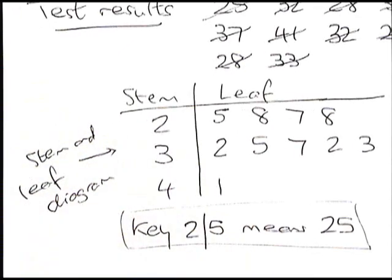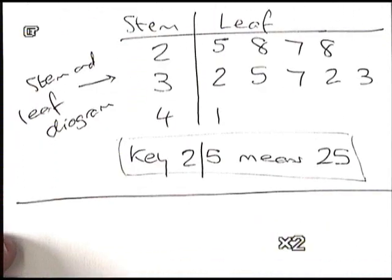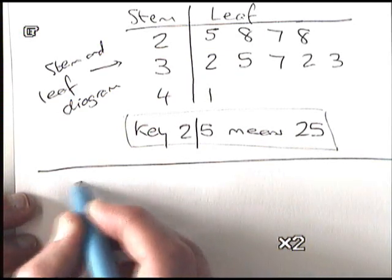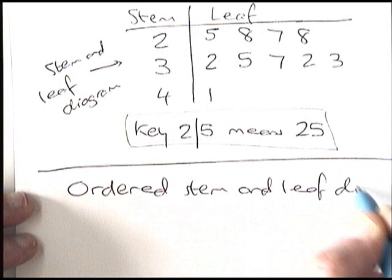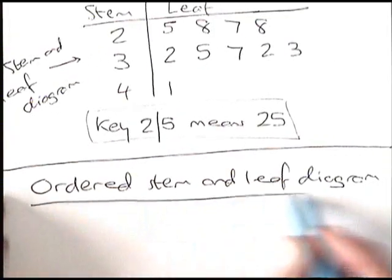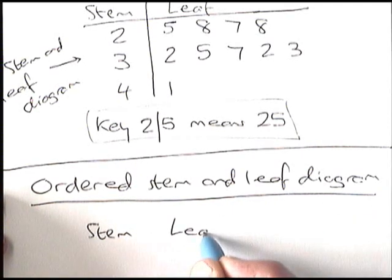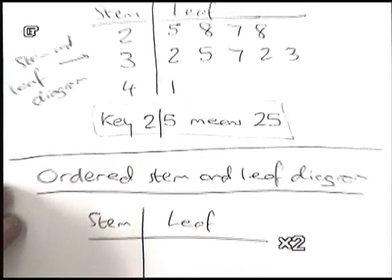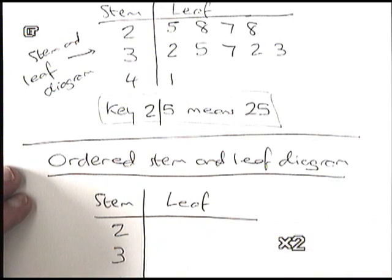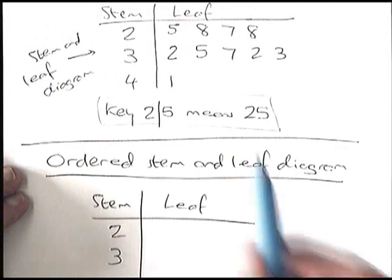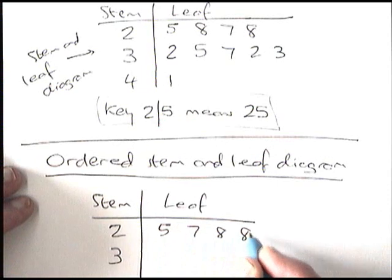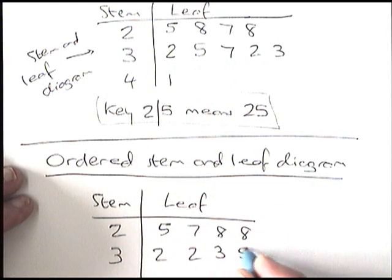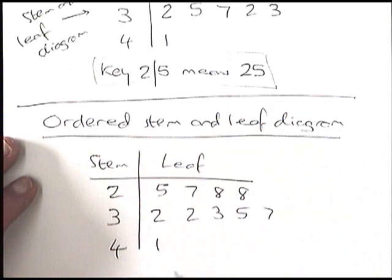Now we're going to change it to an ordered stem and leaf diagram. Draw out the same stem — twos, threes, and fours for twenties, thirties, and forties — but rewrite the leaves for each row in order from smallest to biggest. The twenties row becomes 5, 7, 8, 8; the thirties row becomes 2, 2, 3, 5, 7; and there's just a 1 in the forties row. Make sure everything is lined up in the correct column.